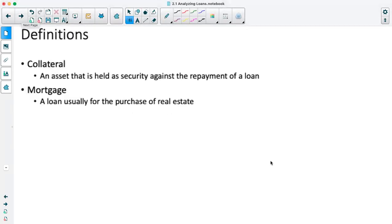Some definitions: collateral is an asset that's held as security against full repayment of a loan. This could be a vehicle, it could be property, essentially it's something that you're willing to give up if you cannot pay back the loan.